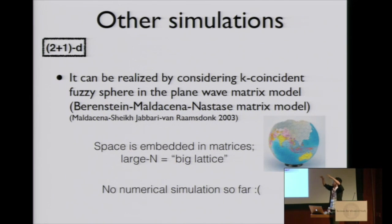In their case, two-dimensional space is realized by fuzzy sphere. Space-time is embedded in matrices. Large lattice corresponds to large n. So when we take large n, we can realize three-dimensional theory. Unfortunately, no numerical simulation has been done so far in this case. But soon we can do.